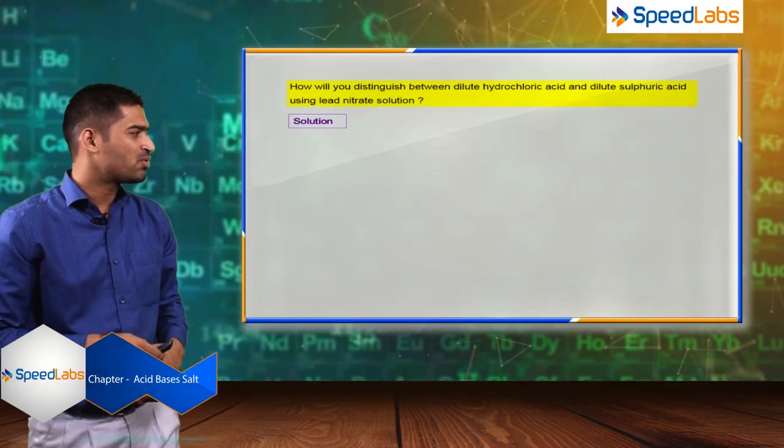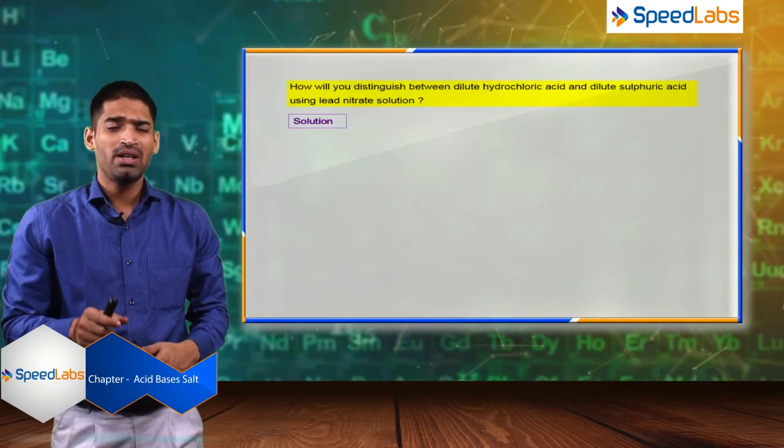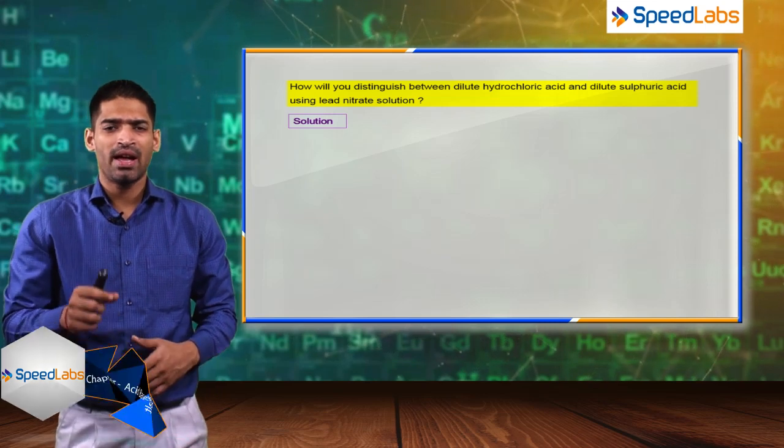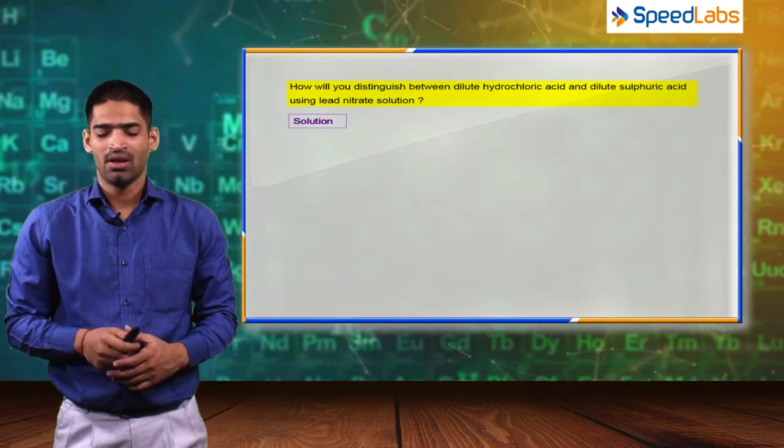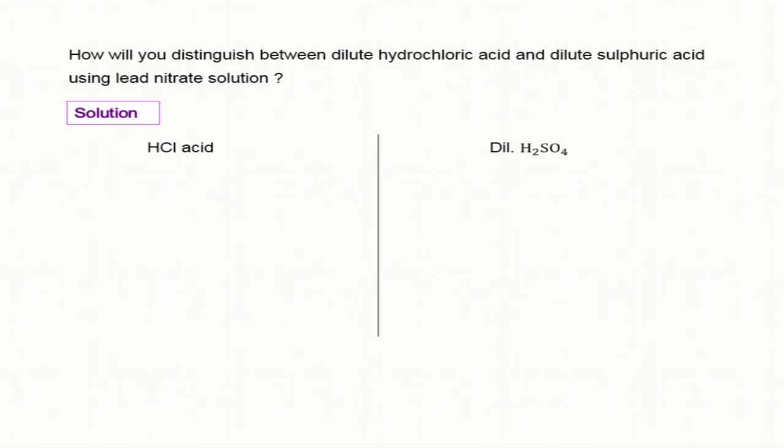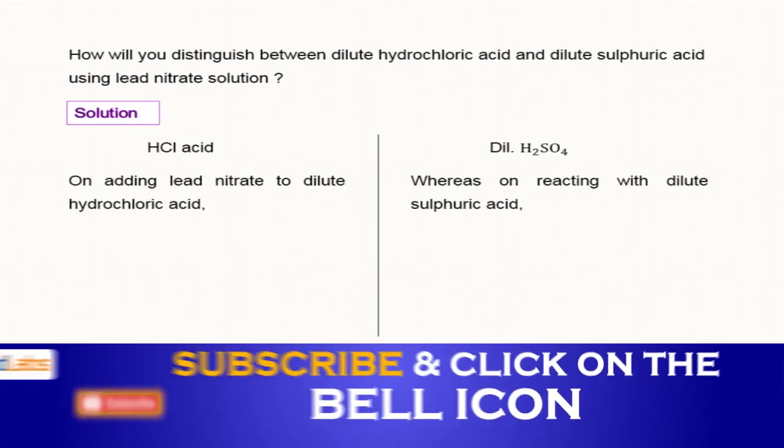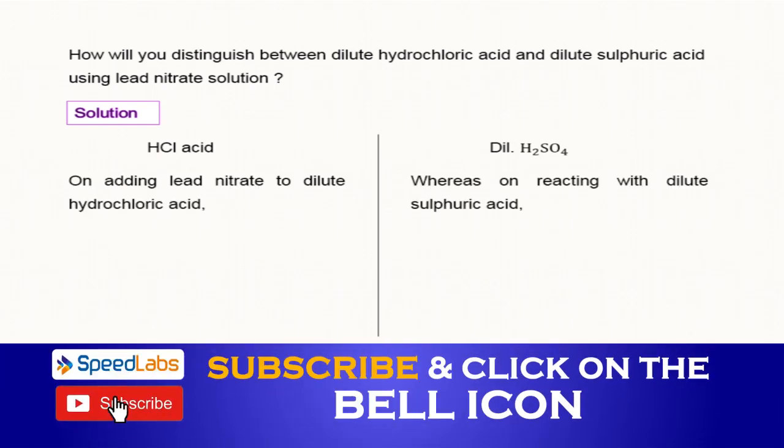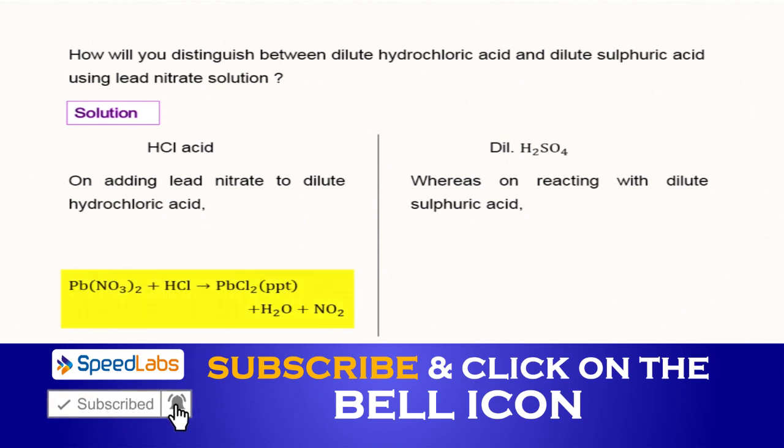Here you are asked to distinguish between dilute hydrochloric acid and dilute sulfuric acid. The method of distinction is to take both acids in separate test tubes and add lead nitrate to them.